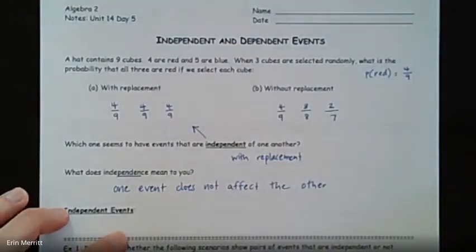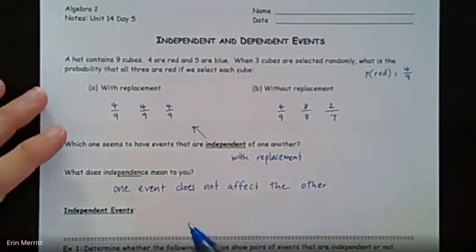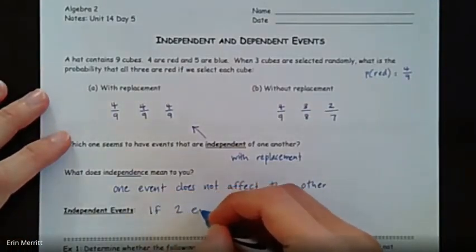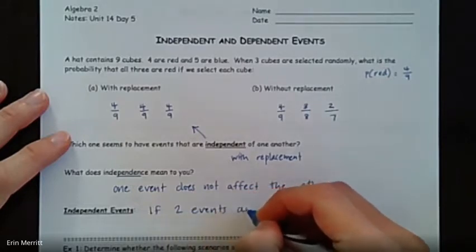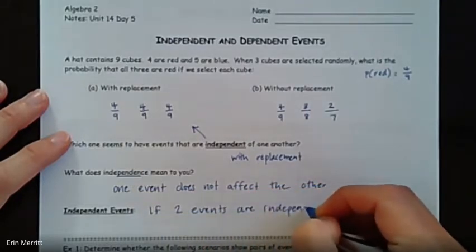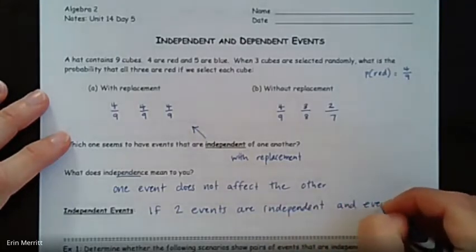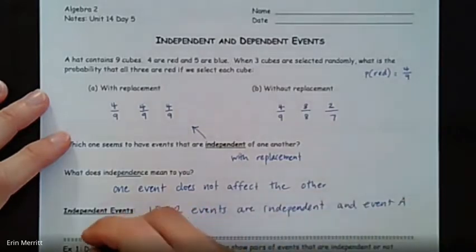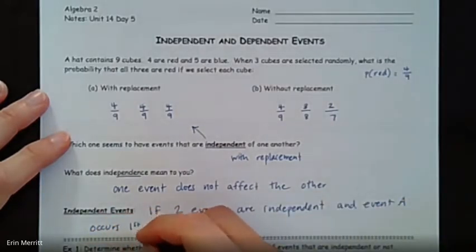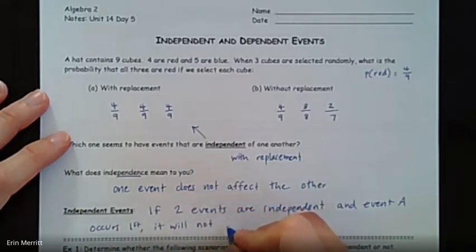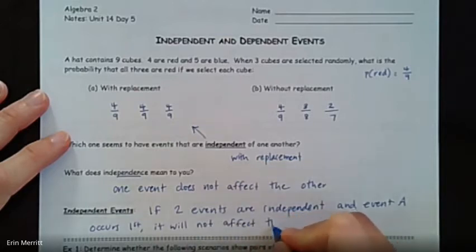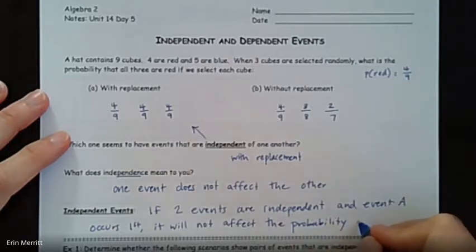So we say: if two events are independent and event A occurs first, it will not affect the probability of event B.